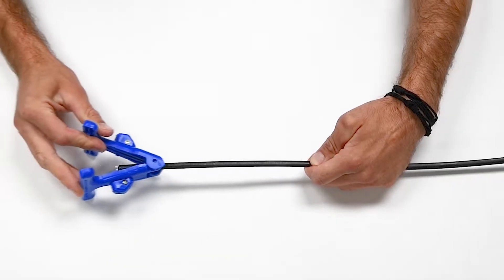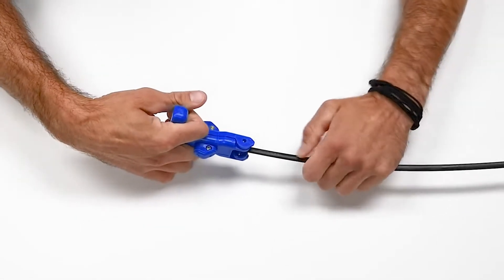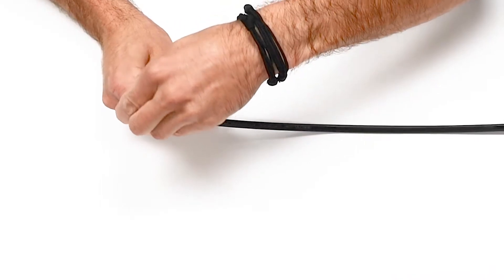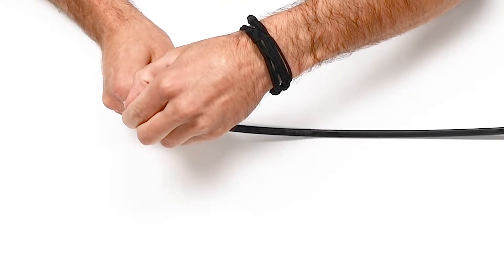Now, what we want to do is we want to slit the outer jacketing of the fiber. Now we peel it off of the central strength members.